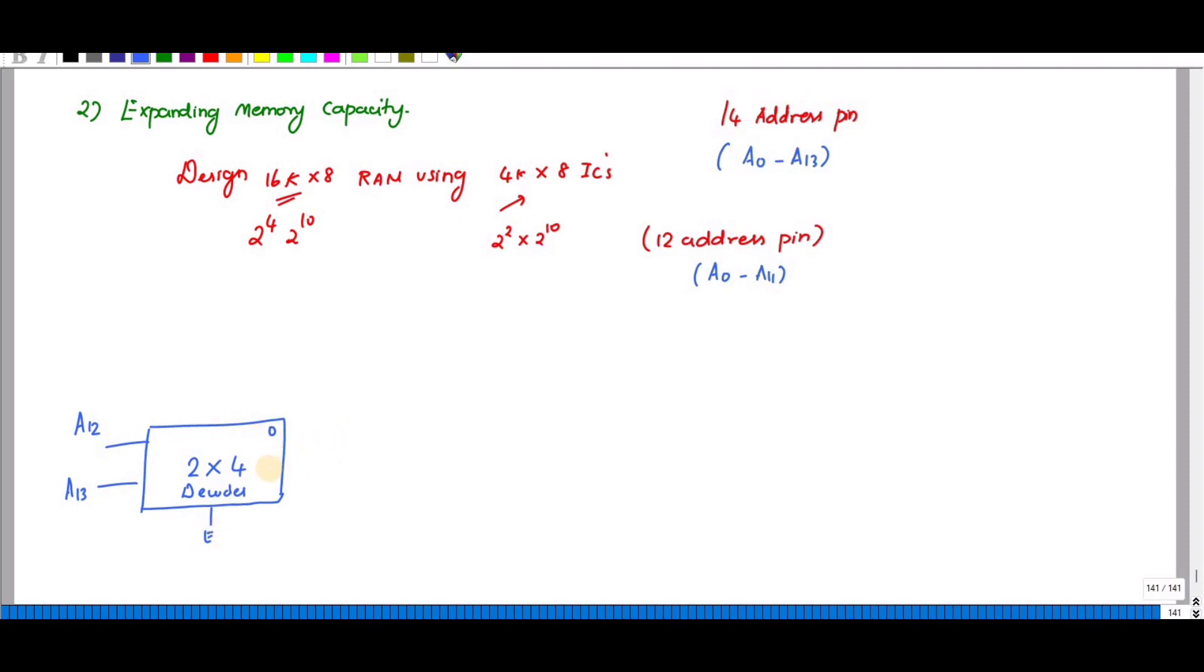It will produce four outputs. These four outputs are given to the four 4k × 8 RAMs as chip select. This is your first chip select, next one is this, this one.